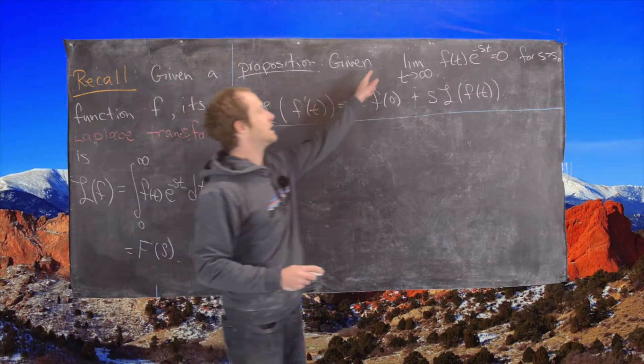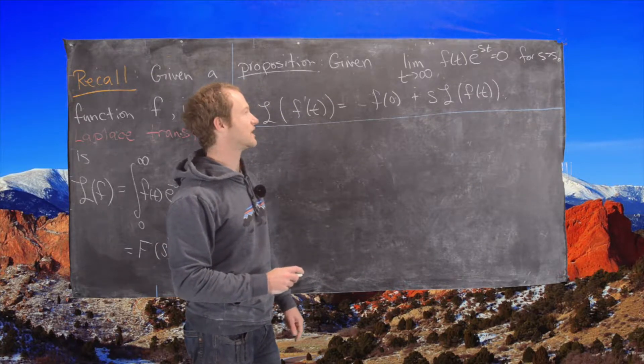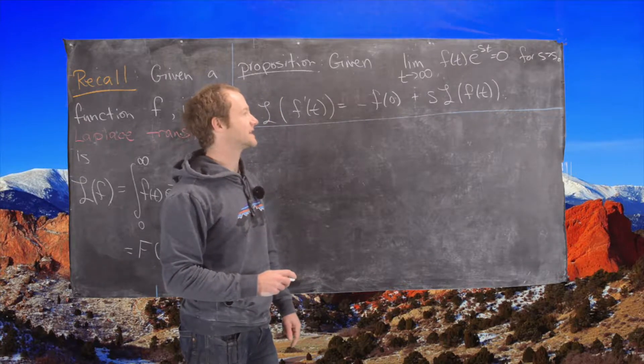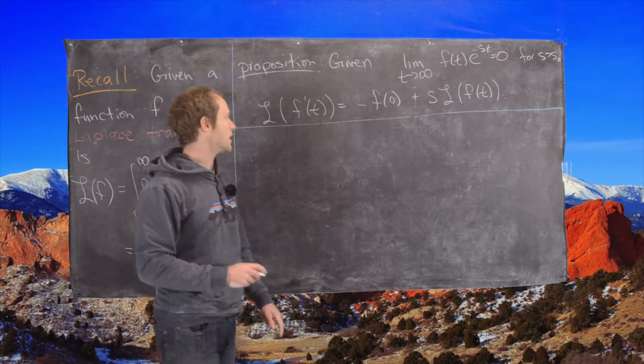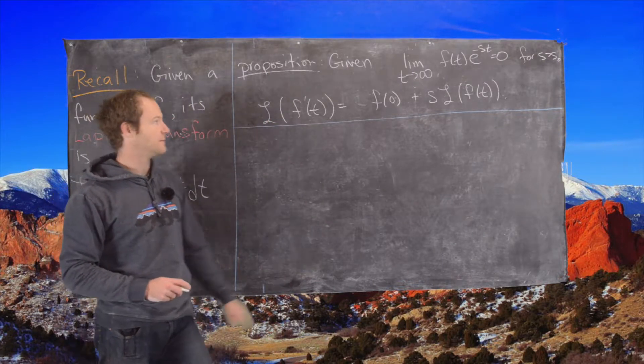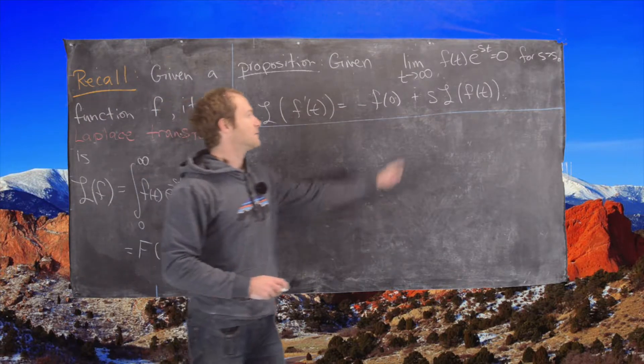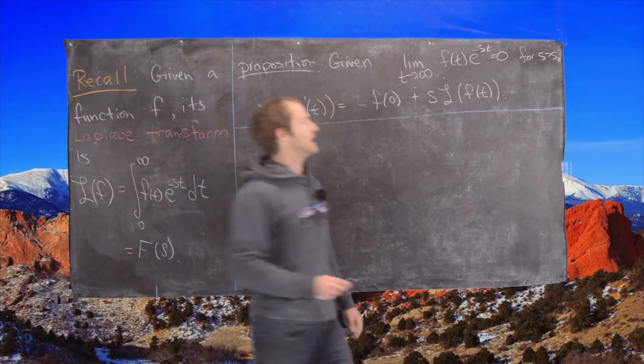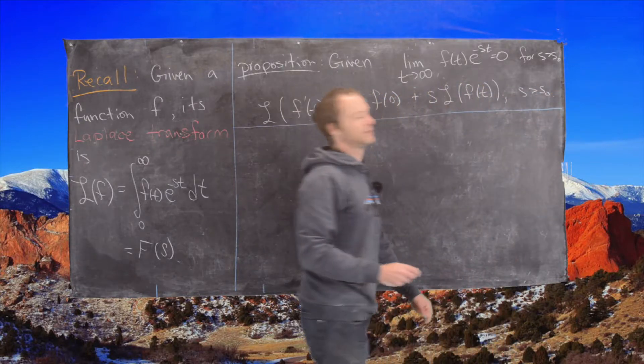So what we have here is that if we have this technical consideration on this limit—this limit as t goes to infinity of f(t)e^(-st) is equal to 0 for s bigger than s_0—then we have the Laplace transform of f' is equal to negative f evaluated at 0 plus s times the Laplace transform of f(t). And this holds for s bigger than s_0.